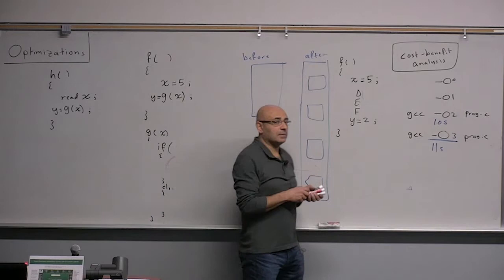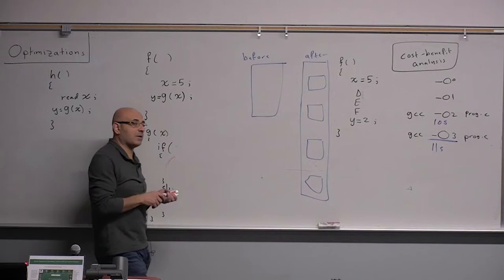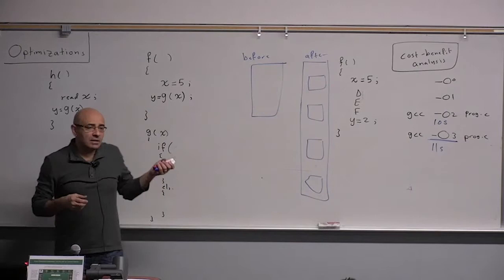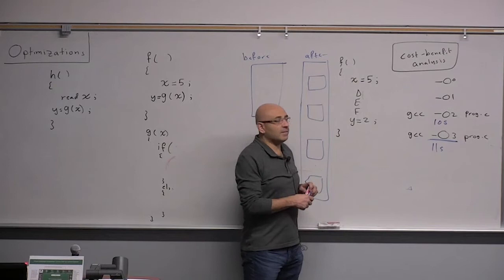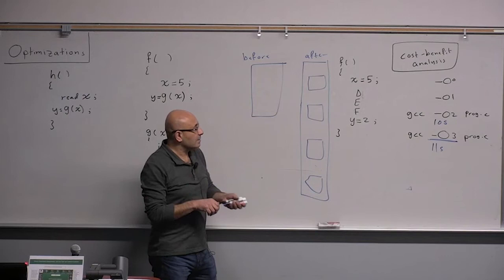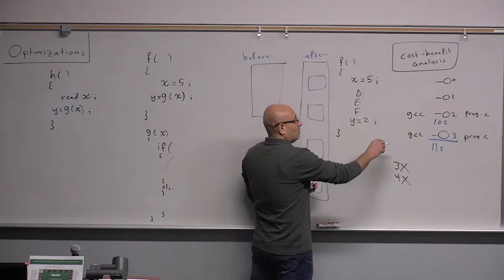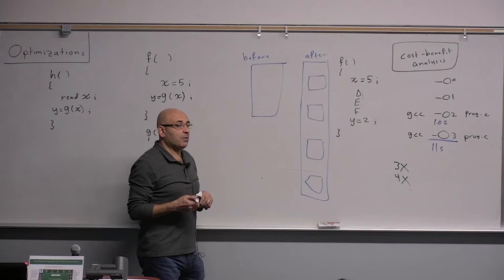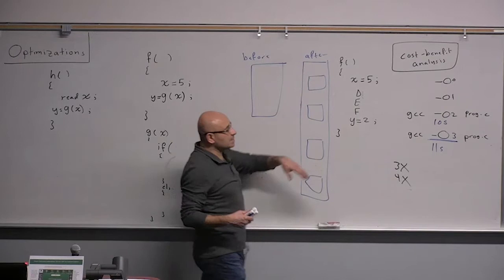Yes, there are compilers that use hints from the programmer — pragma instructions — but even with those, the programmer doesn't know what code the compiler will generate, so it's a very complicated process. In general, on average, compiler optimizations improve performance. On average you should expect a 3x or 4x performance improvement from a compiler like GCC when compiling with -O3. Sometimes it's 10 times faster with compiler optimizations.